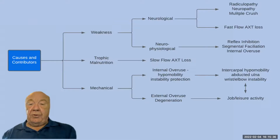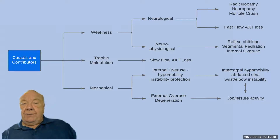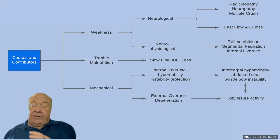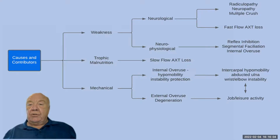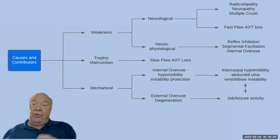Causes and contributors to tendinosis: weakness, trophic malnutrition, or mechanical stressing. Weakness is either neurological or neurophysiological. If it's neurological, it's going to be a radiculopathy, a neuropathy, or a double-crush problem. That weakness can be conduction-based — electrical conduction problems — or fast axoplasmic flow compromise. Fast axoplasmic flow will cause this weakness. Whether you include this in neurological weakness or neurophysiological weakness is up to you, but you definitely need to state which it is.